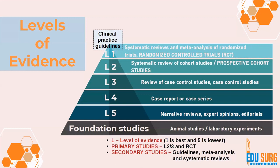What that means is that if you are getting some information from a systematic review or a meta-analysis of RCTs, that is evidence you can very easily implement in practice if it is from a good source. So L1 is probably the best level of evidence and L5 is the lowest level of evidence.